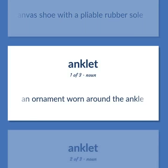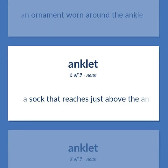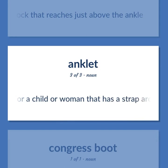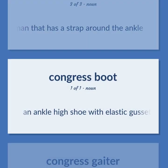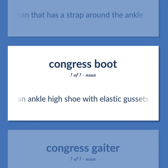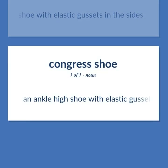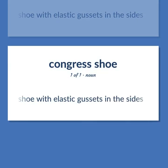Footwear types: A canvas shoe with a pliable rubber sole. An ornament worn around the ankle. A sock that reaches just above the ankle. A shoe for a child or woman that has a strap around the ankle. An ankle-high shoe with elastic gussets in the sides.